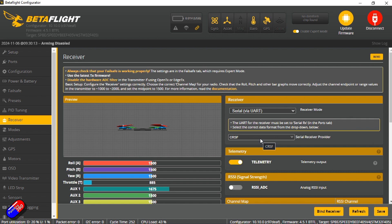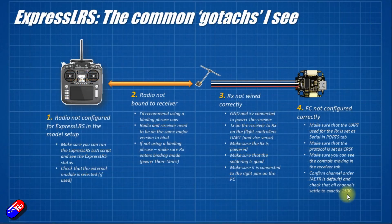Last little tip I'll give you is make sure that the channel order is correct. AETR is going to be defaults in things like beta flight. Make sure that when you move the throttle, it's the throttle channel that's moving and all the channels kind of settle down for the roll, pitch and yaw at 1500 and then you're set.